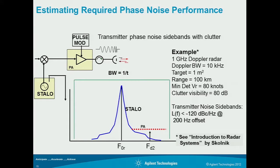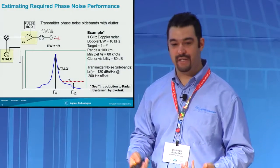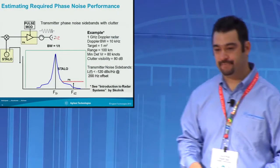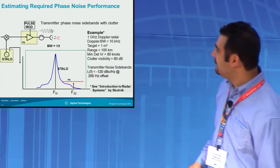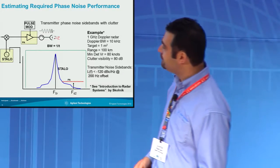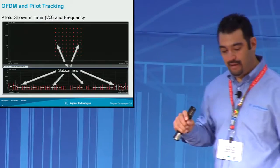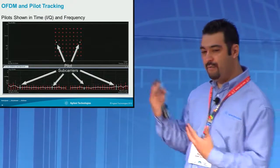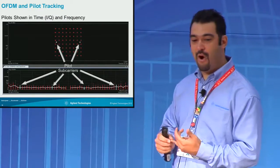So now you have your system requirements if you're trying to get to this performance level. From there, you can start to choose what type of signal generator or LO you're going to need for that system to meet these requirements. That was a simple radar example. Now we're going to change gears and talk about OFDM.